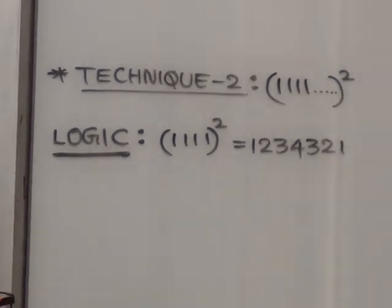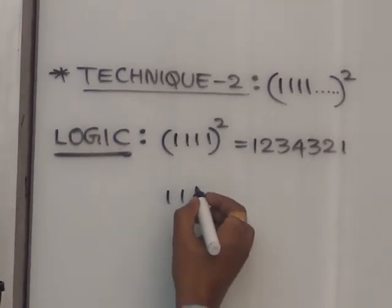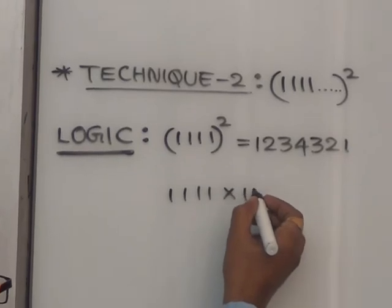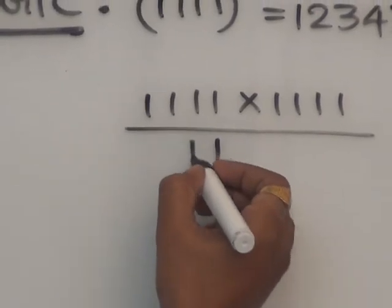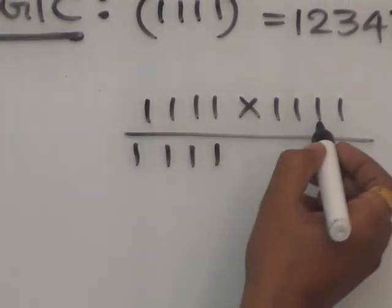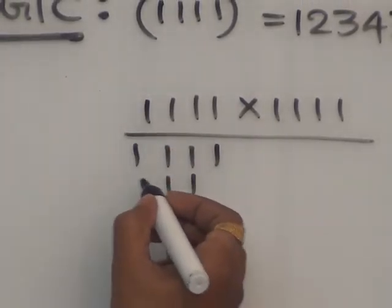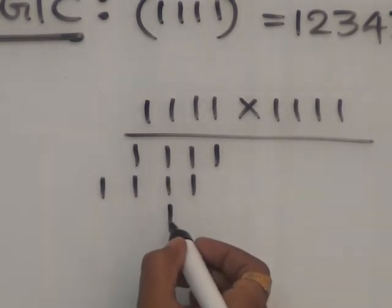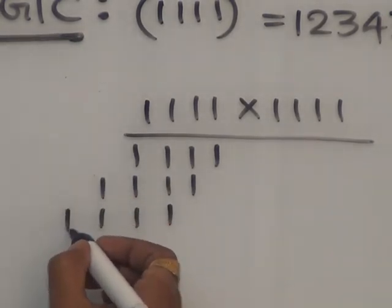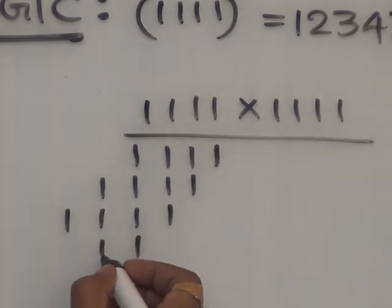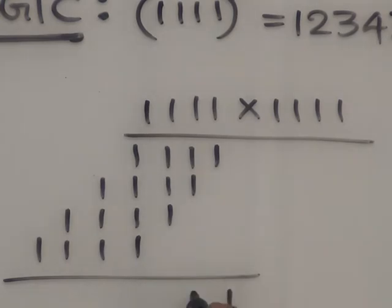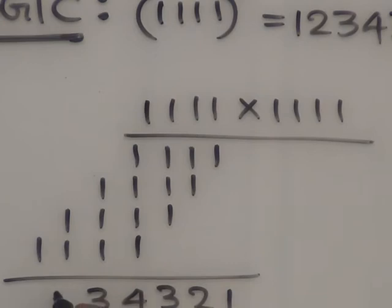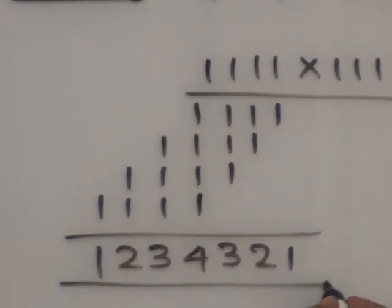4 ones — forward: 1, 2, 3, 4 — and decrease in reverse order: 3, 2, 1. So the answer is 1234321. Check — 1111 into 1111: multiply by each one, add chayatham. One, two, three, four, three, two, one — chowenndi same answer e vach chindhi: 1234321.